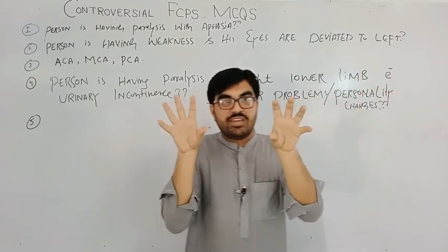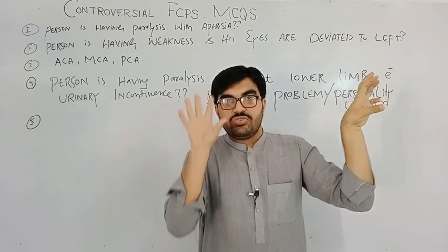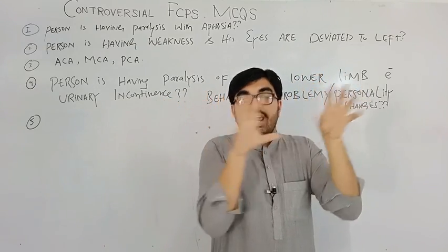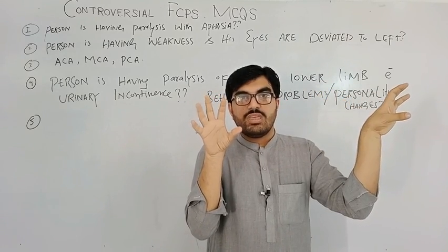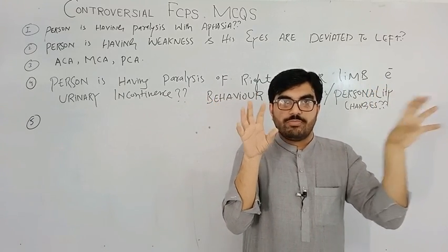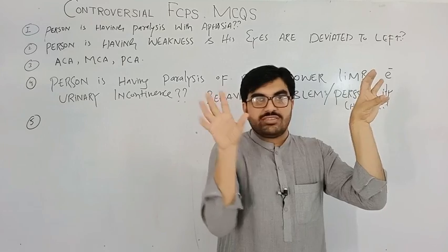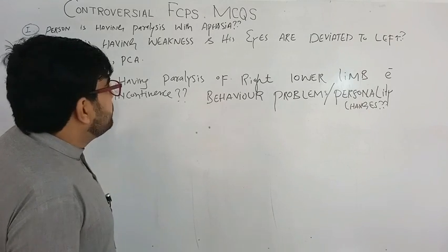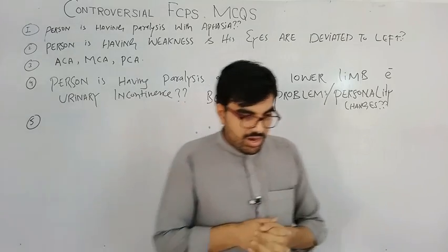If both eyes are deviated — that is a cortical stroke. But if only one eye is deviated outward, that is a pontine stroke, because the sixth nerve exits the pons. So the simple trick is: single eye deviated = pontine stroke; both eyes deviated = cortical stroke. The patient in the left MCA stroke also has contralateral homonymous hemianopia on the right side.